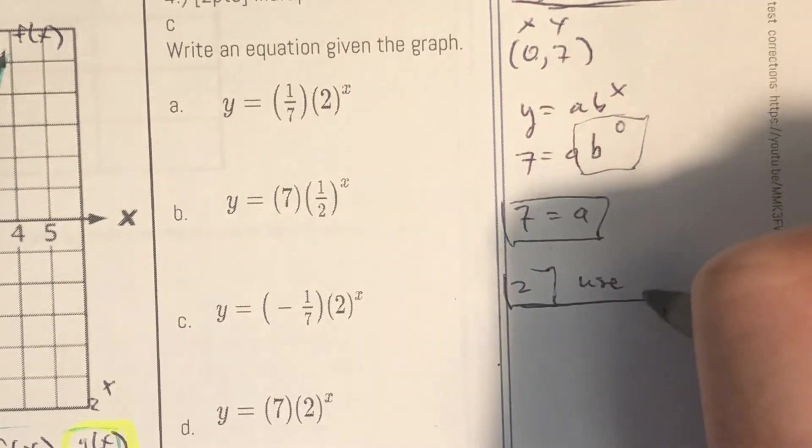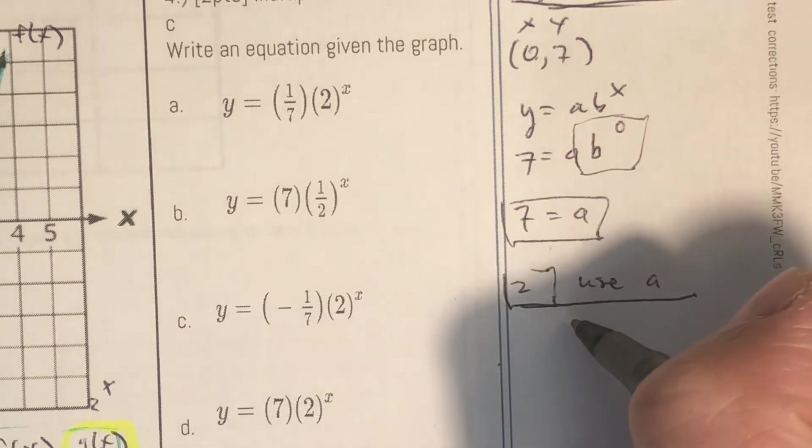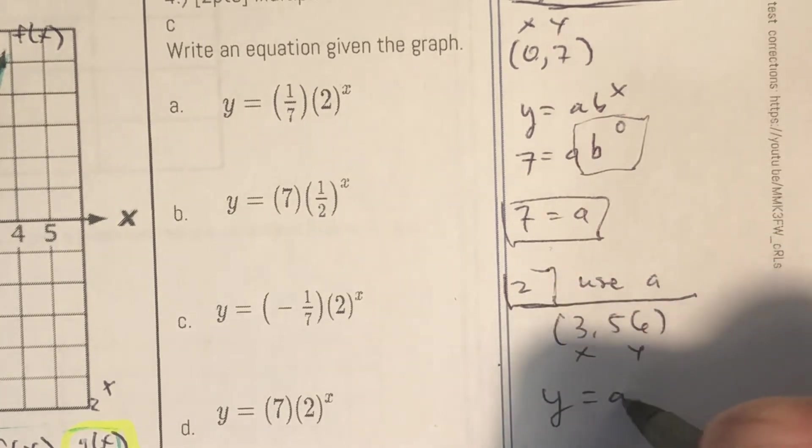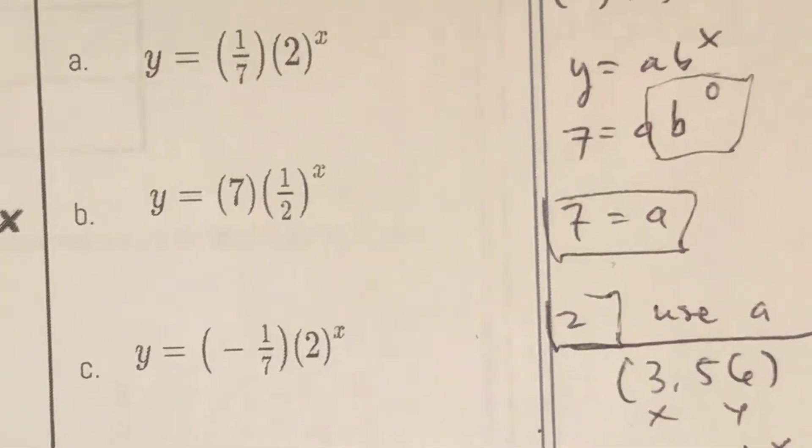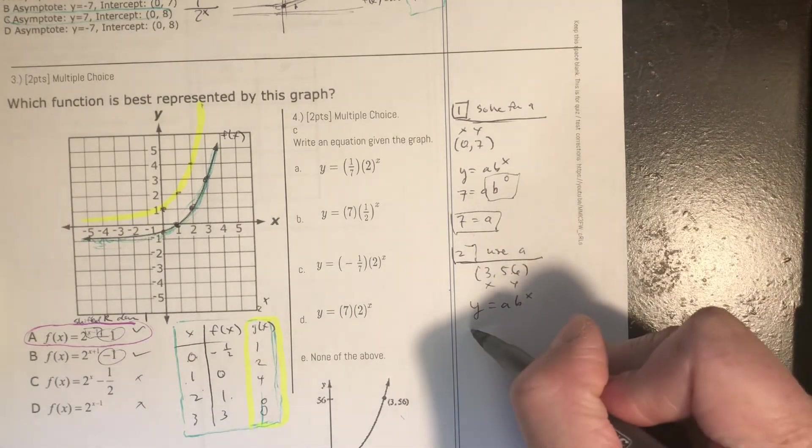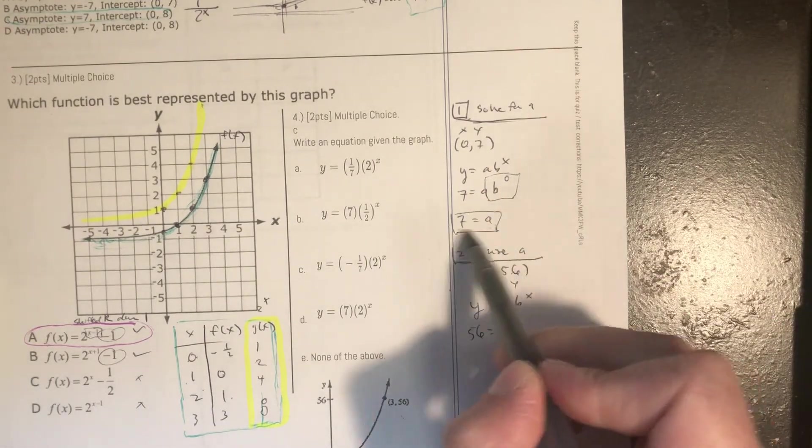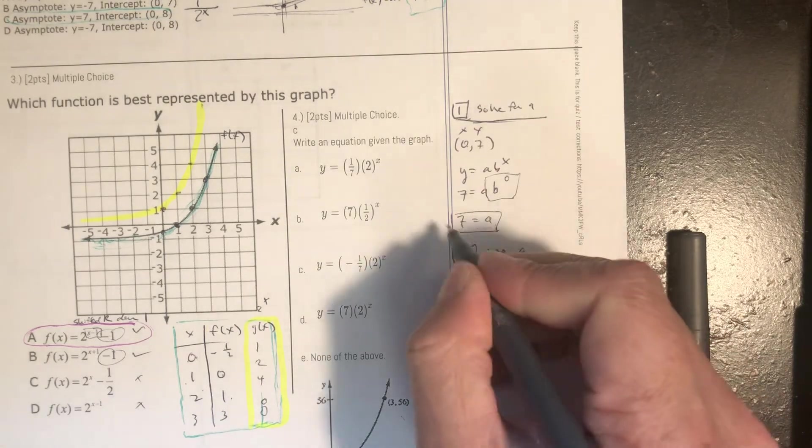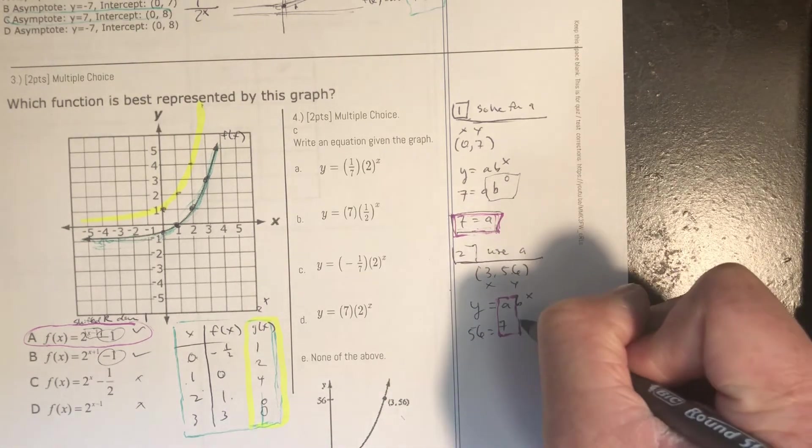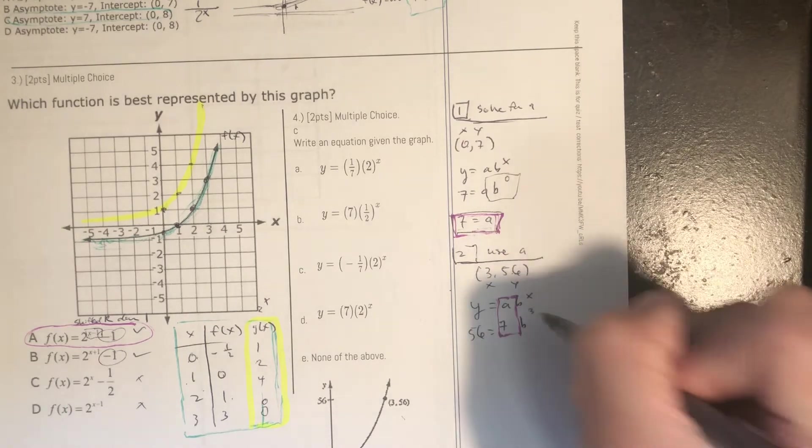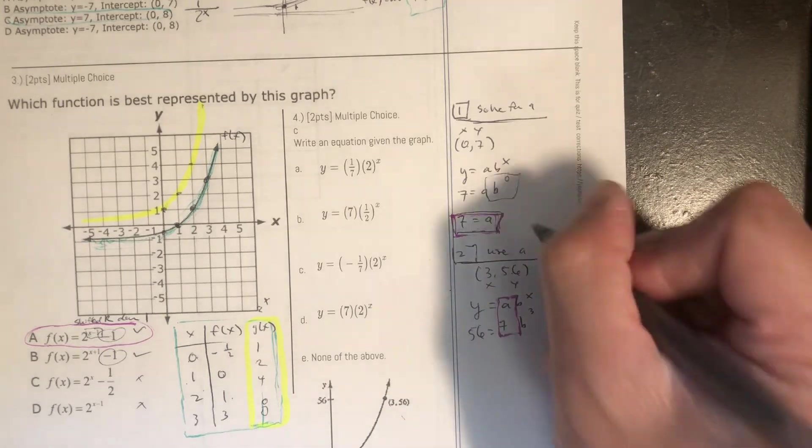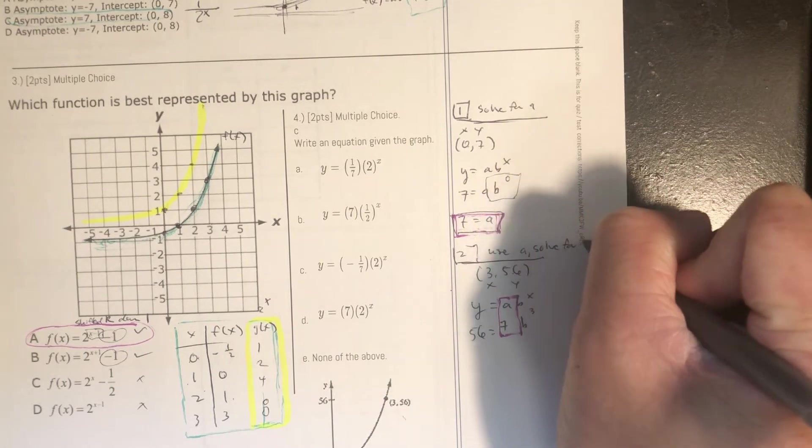Now I'm going to use that, use a in our second order pair. So our second order pair was 3 comma 56. So same thing, y equals a times b to the x power. Substitute in my values. 56 is y. Now I can use my a value of 7 here. So that gives me 7b and then my x value is 3. And then here I can just solve for b and then I have an a and a b and I can write an equation.